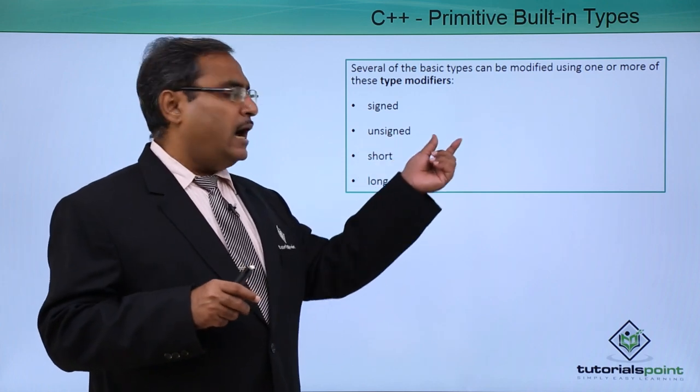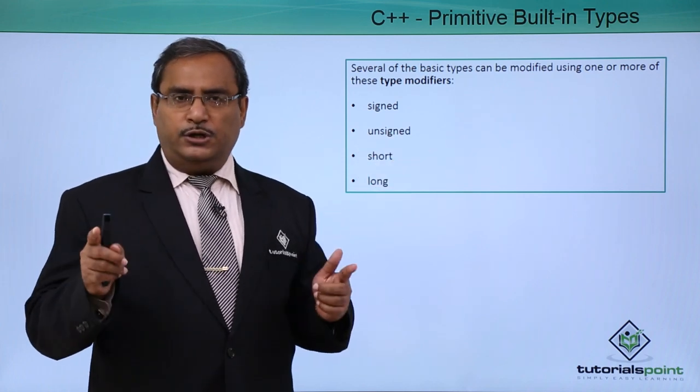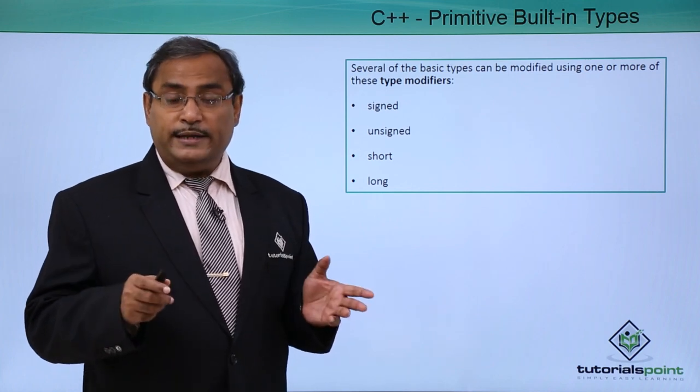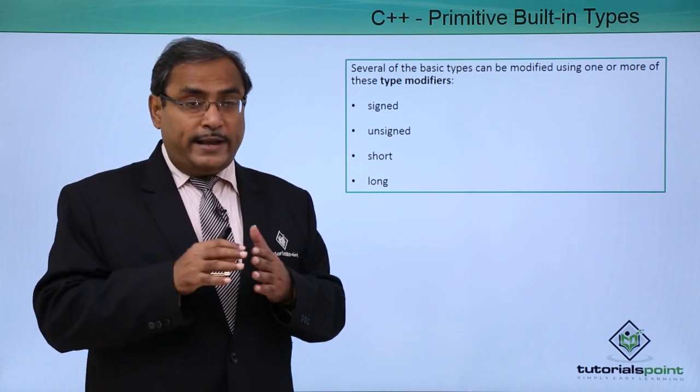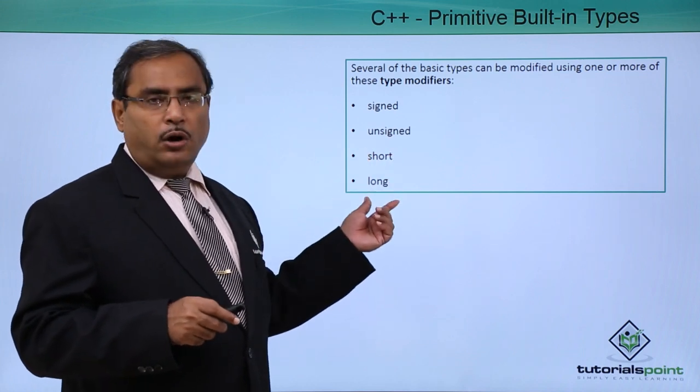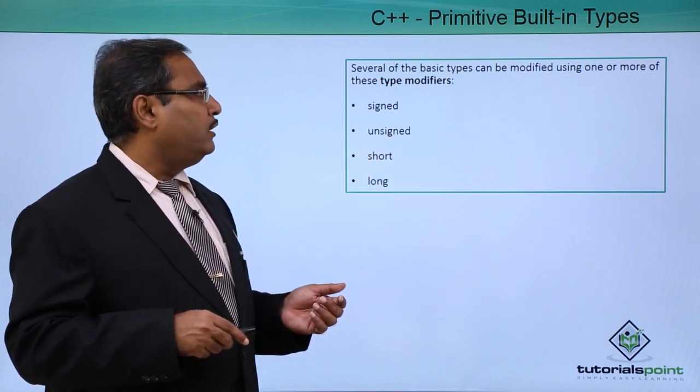But in case of unsigned int, all the 32 bits will be holding the value for the number. In case of unsigned int, we cannot express any negative value. Short and long are the other type modifiers.